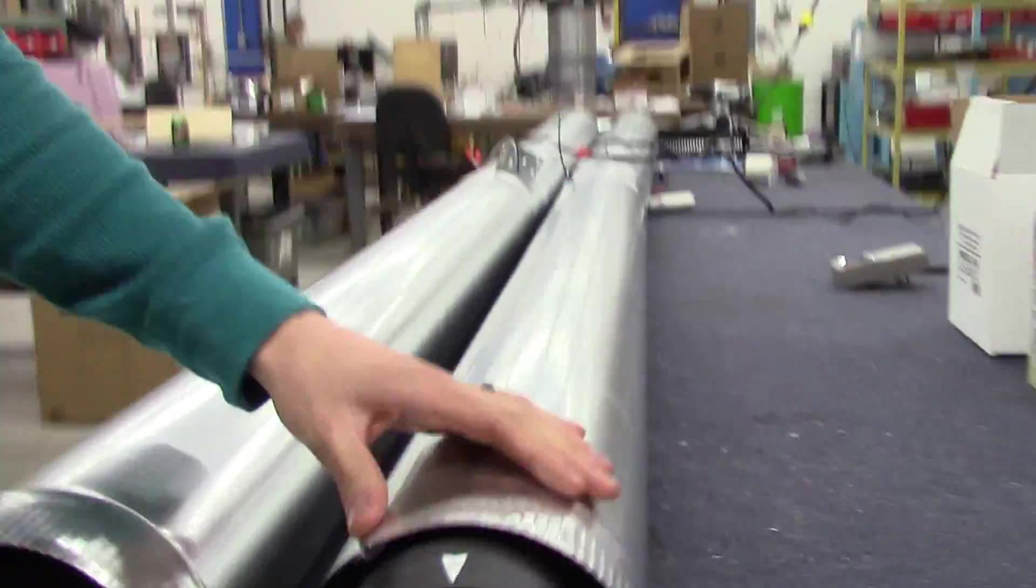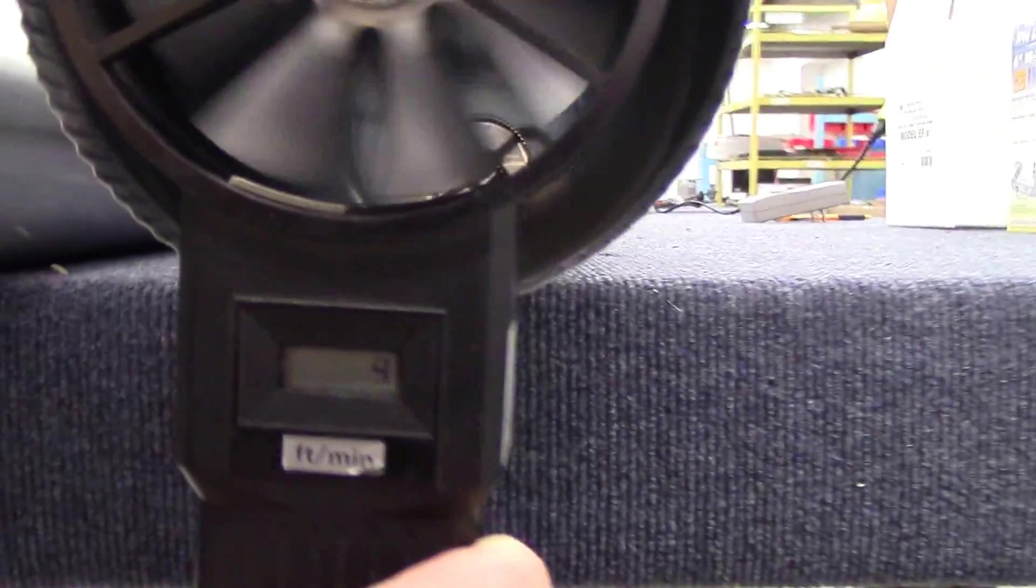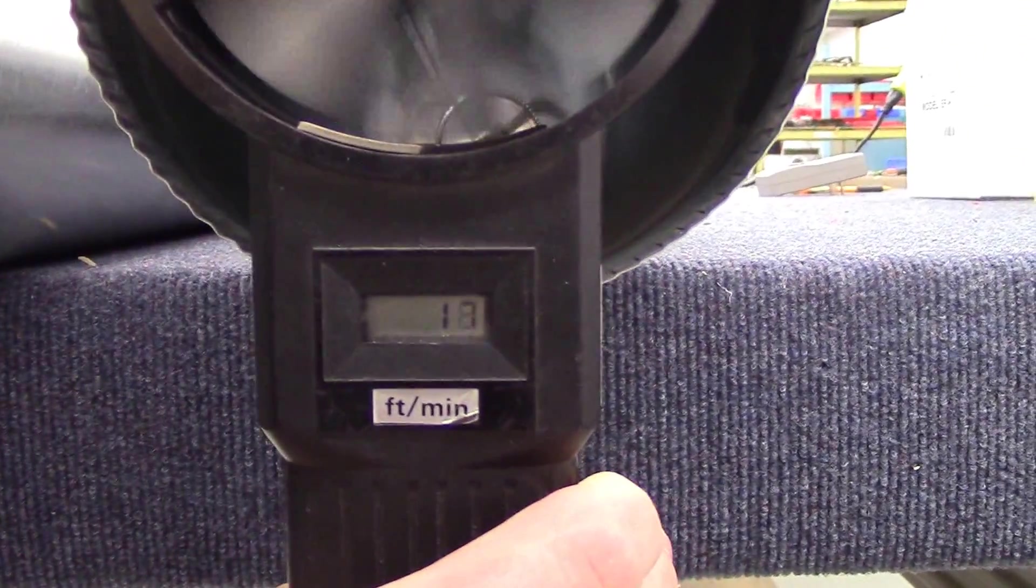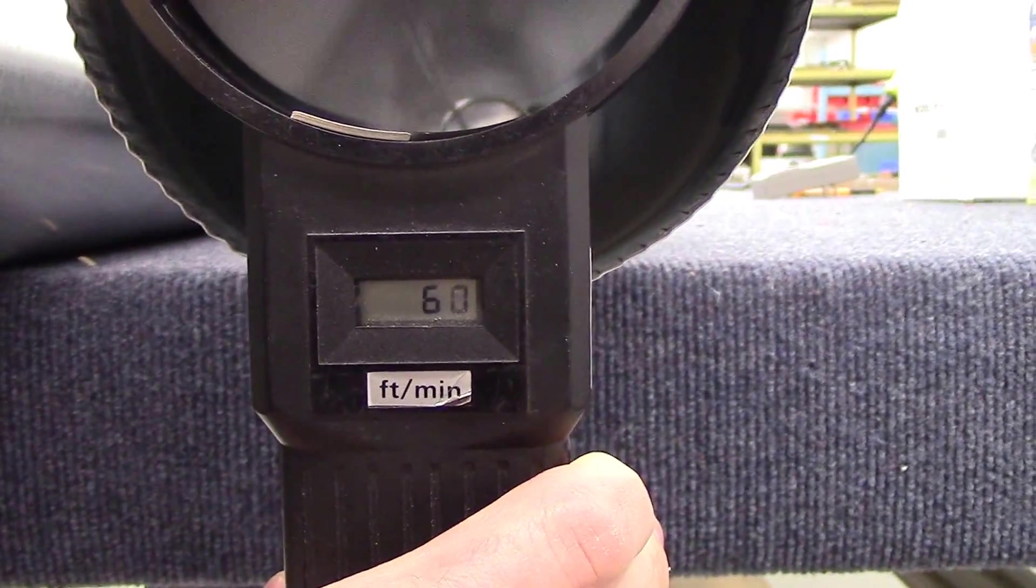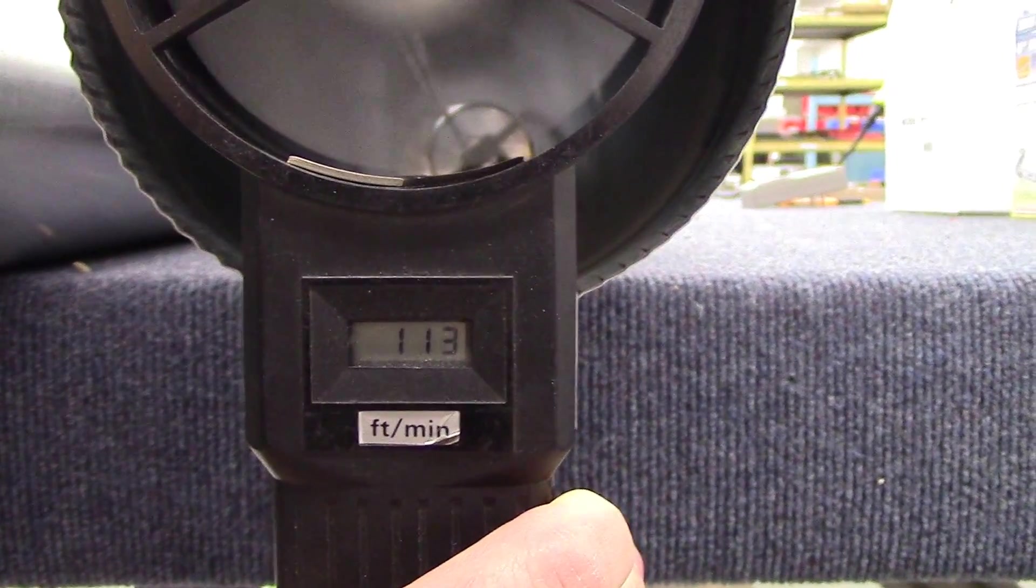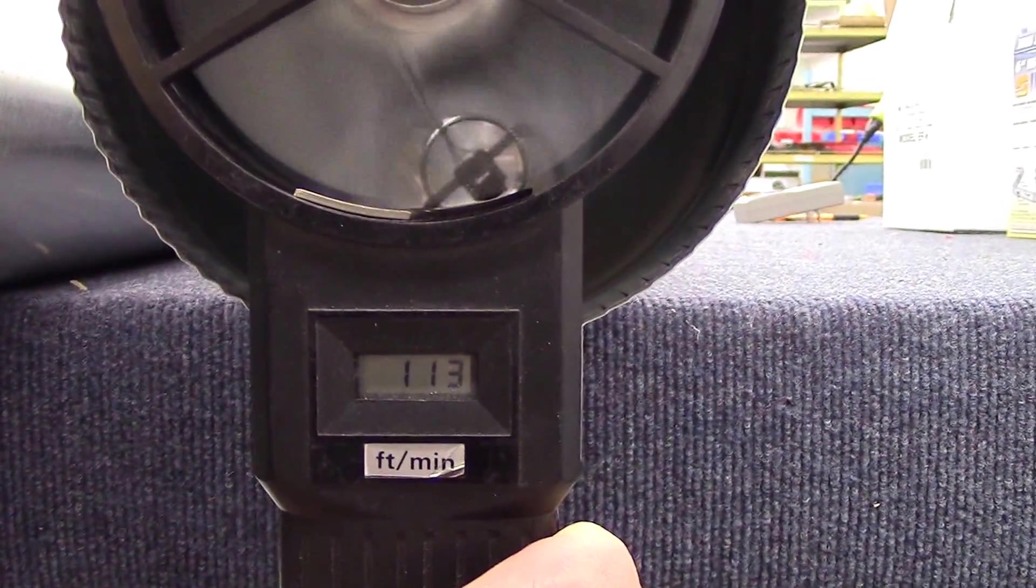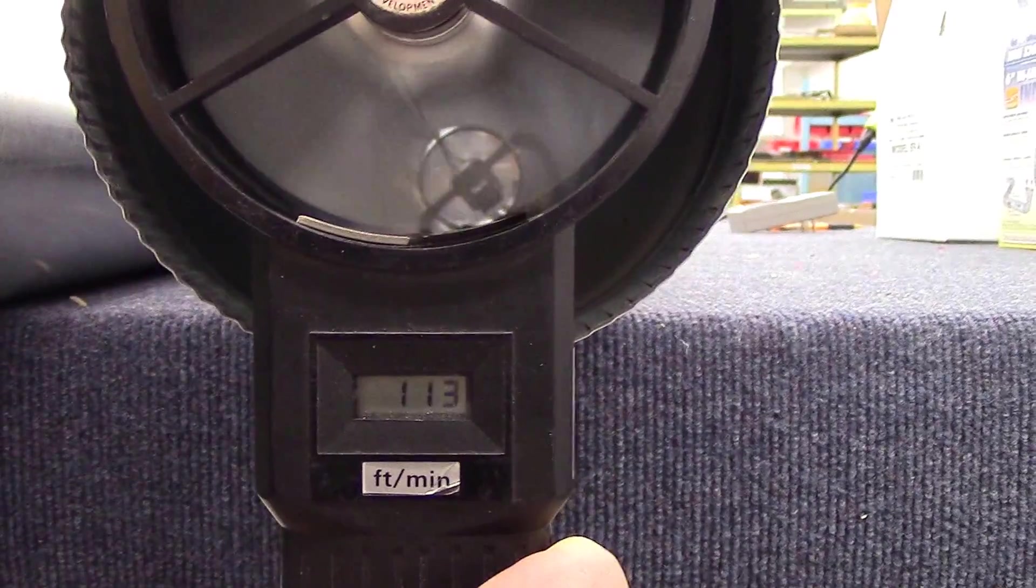I'm going to first put it right up against the edge here of the Suncourt unit. And what you see in that dial is the feet per minute ramp up. So this is how many feet per minute. And once it stabilizes, that's our feet per minute. So we're at 113 feet per minute in air velocity.